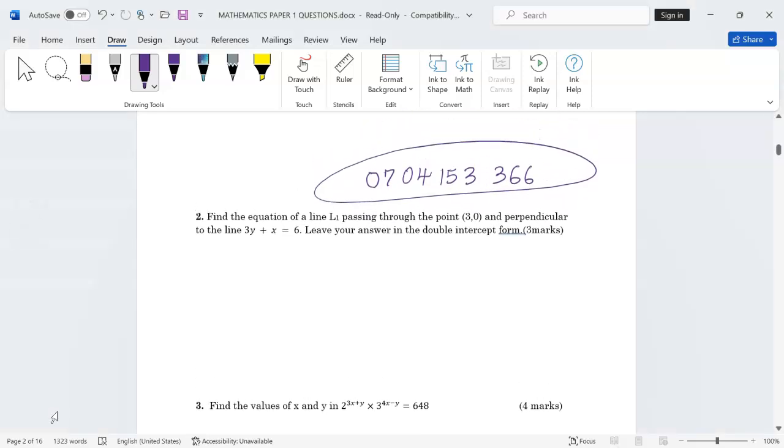The double intercept form should be known as the form whereby we leave one on one side, and on the other side we have x/a plus y/b. It should also be known that when an equation is in this format, the reciprocal of a gives us the x-intercept.